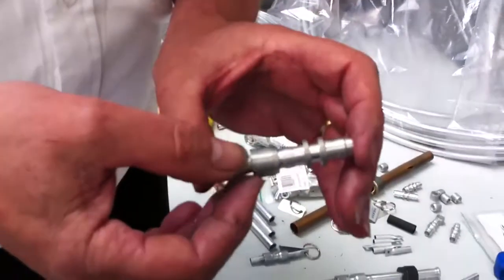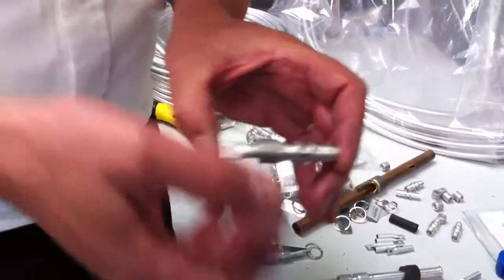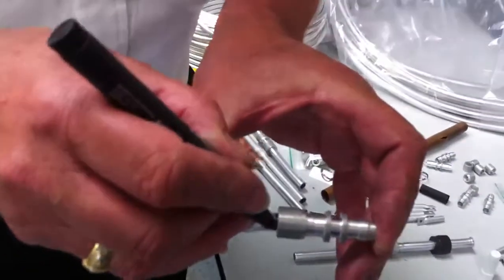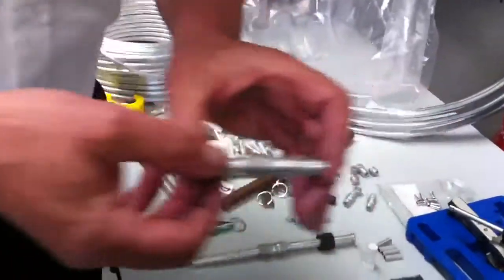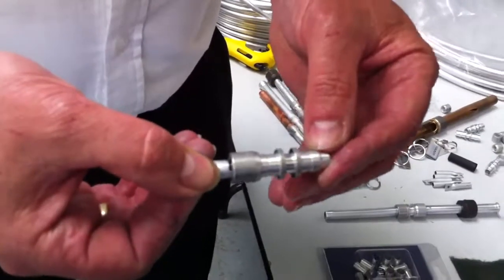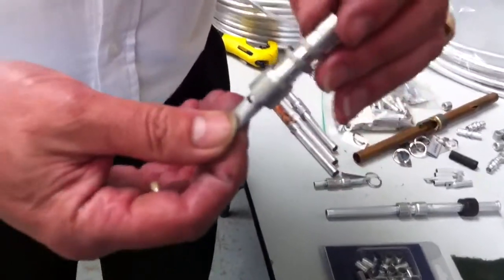We pop the tube into the connector, and then we put a mark on the tube so we can see when we actually come to close the joint together that the tube's fully inserted into the connector body before we start to compress.